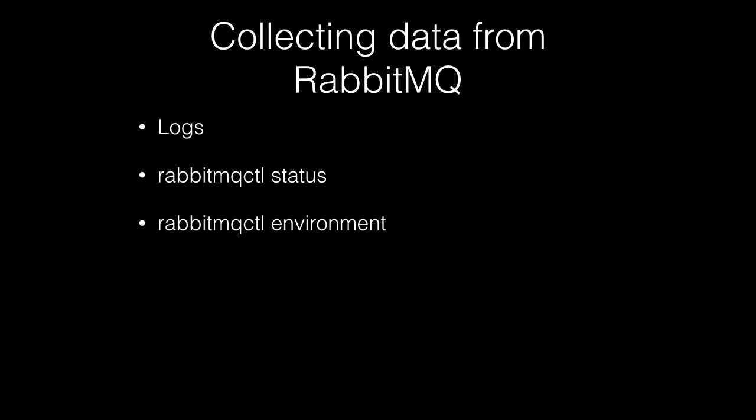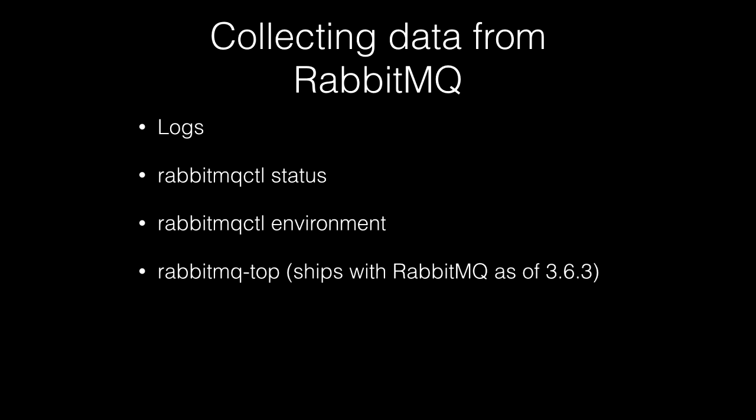RabbitMQ control status, environment, and RabbitMQ control report are commands that provide data from a running system — from a particular node, and some can be cluster-wide. RabbitMQ Top is also not very well-known, but now that it ships with RabbitMQ, we hope it gets more attention. It's a plugin similar to the Unix top command — it shows what Erlang processes consume the most CPU, RAM, and so on, helping you identify what specifically consumes memory. It has a management UI extension; you can enable it, capture data, then disable it.